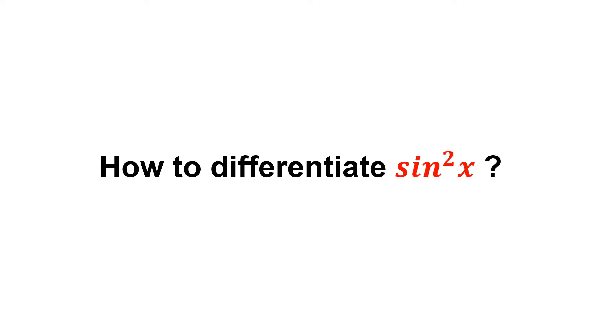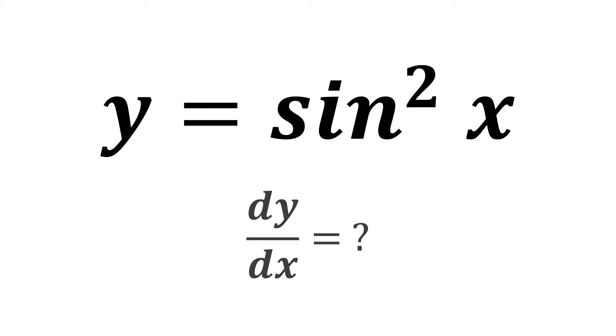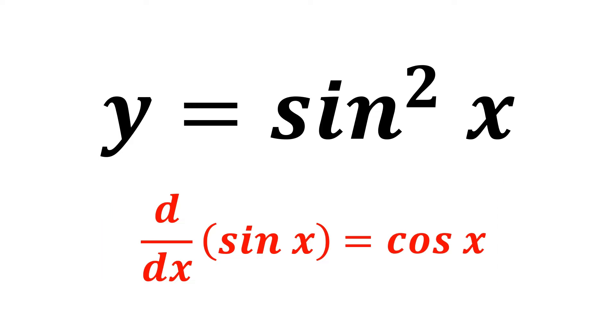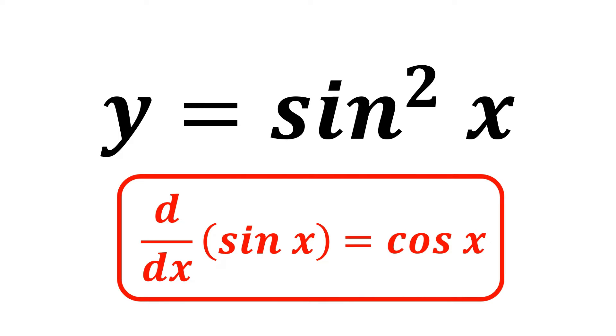How do we differentiate sine squared of x? For the derivative of sine x, we know that it's equal to the cosine of x. But for now, we will be solving for the derivative of sine squared of x.